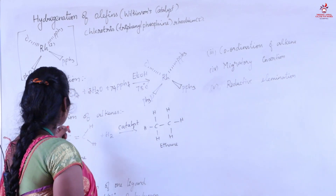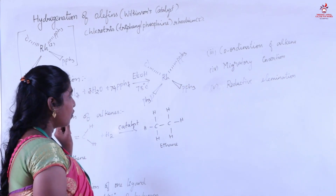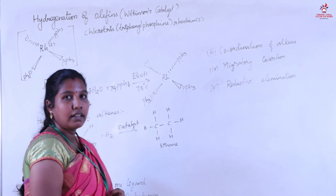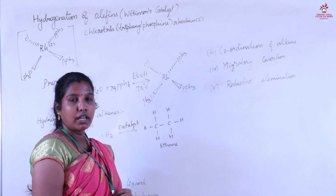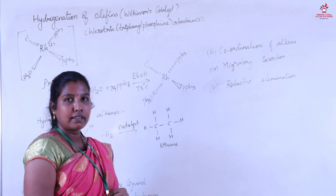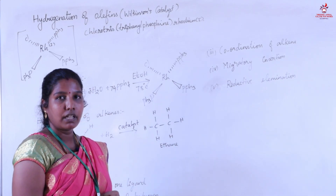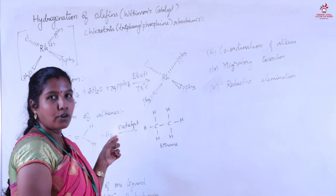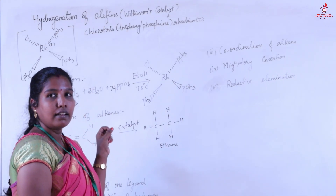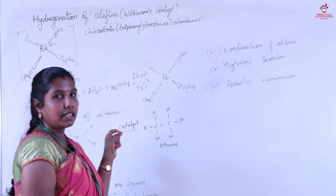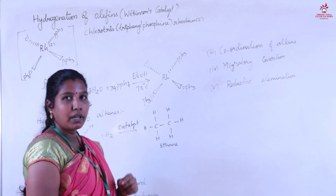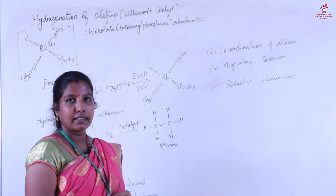Now we see about the preparation of the rhodium catalyst. We take rhodium chloride and excess of triphenylphosphine in the presence of solvent ethanol at 78 degrees temperature. This will form the rhodium catalyst.